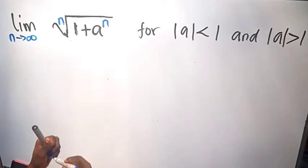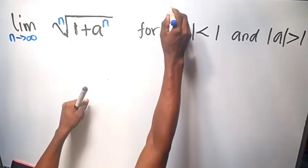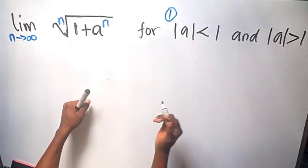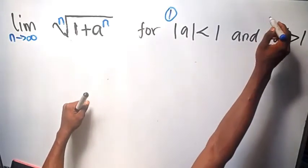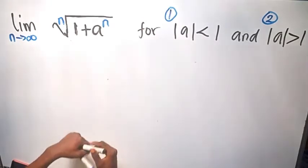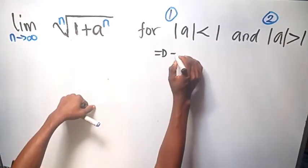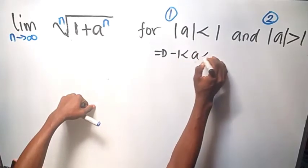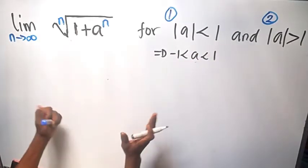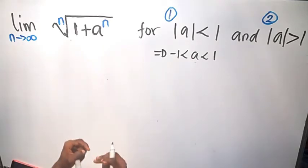We want to check in two different cases. Case 1 is when the absolute value of a is less than 1, and Case 2 is when the absolute value of a is greater than 1. For Case 1, when the absolute value of a is less than 1, it implies that a lies between negative 1 and positive 1 — that is, all the proper fractions, both negative and positive.